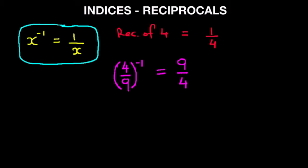3 over 7 to the power of minus 1. So we've got a fraction and we want to find the reciprocal. We turn it upside down. This simply becomes 7 over 3. And that is why reciprocals are very important, especially when using fractions.